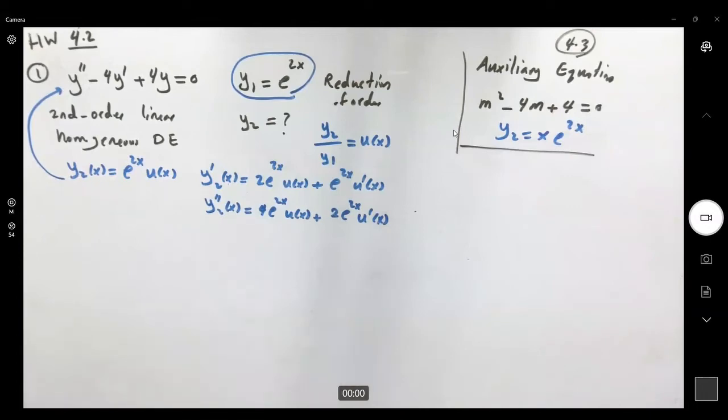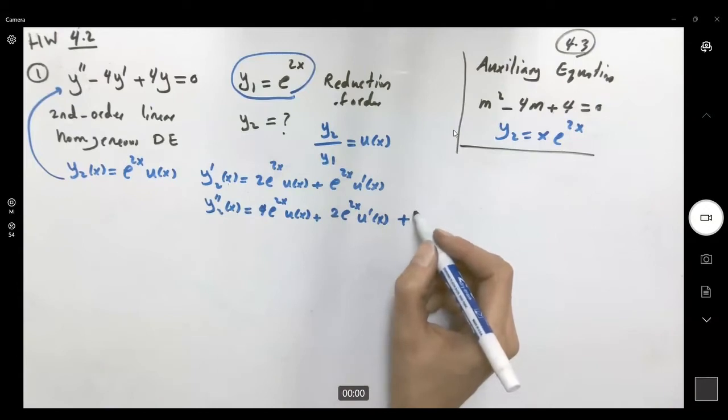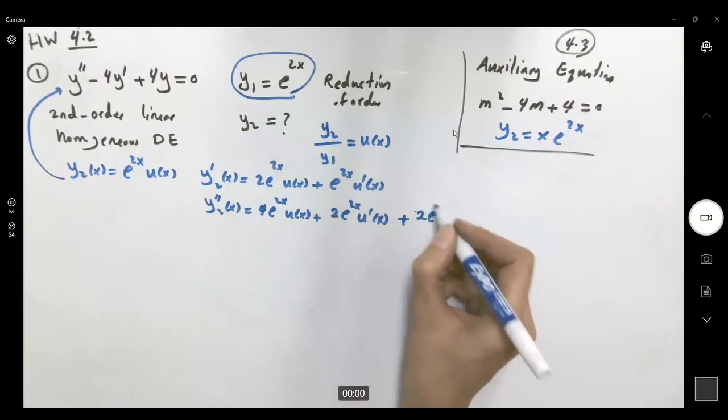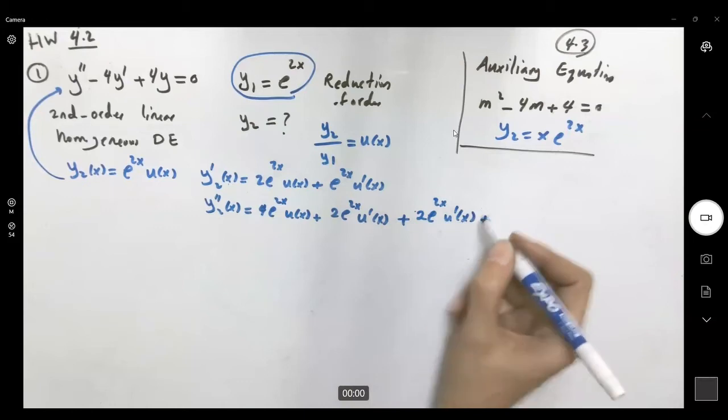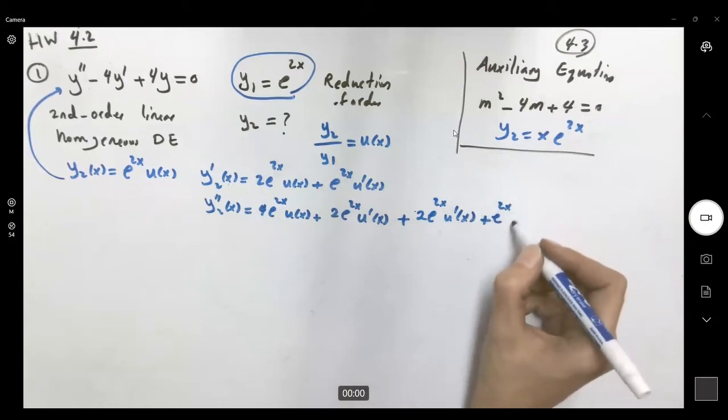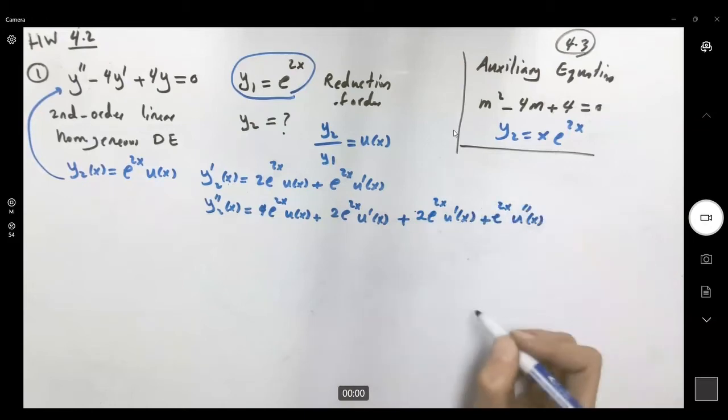Use it as a checkpoint. Plus, now taking the derivative of this guy, applying the product rule, you get 2 e to 2x u prime of x plus e to 2x times the second derivative of u.